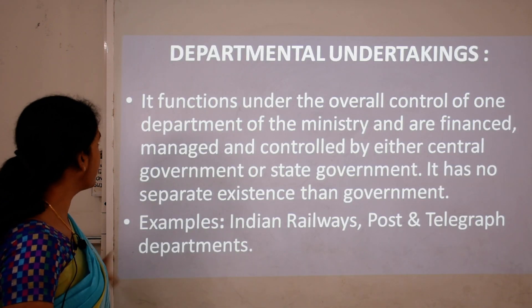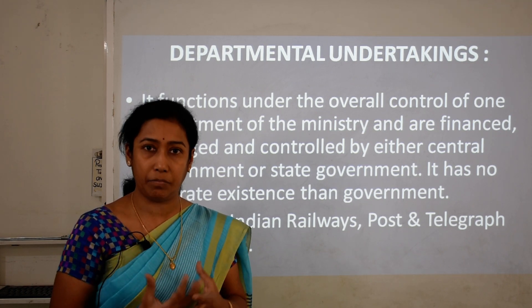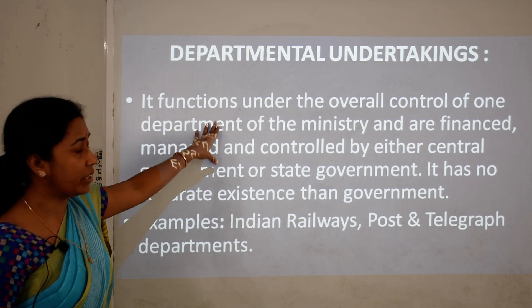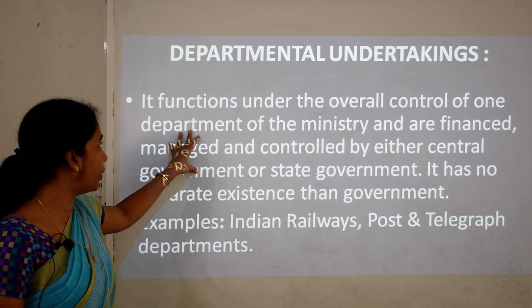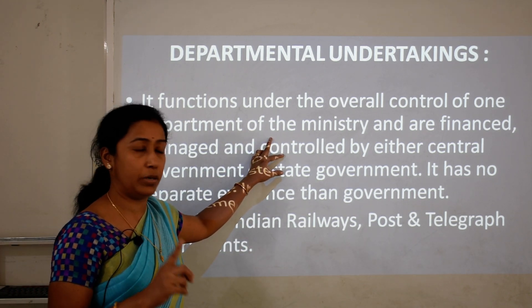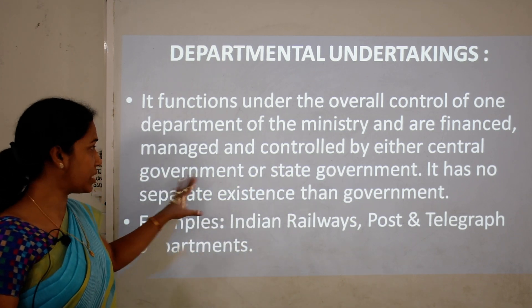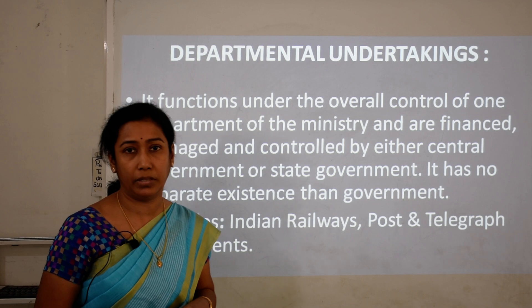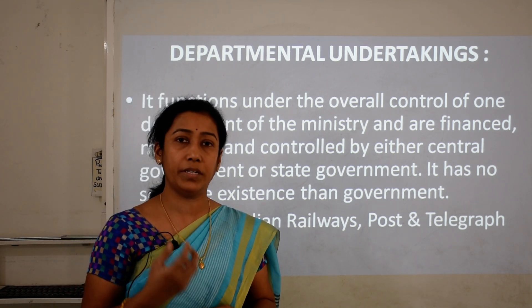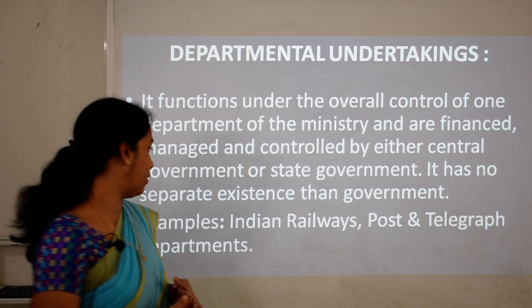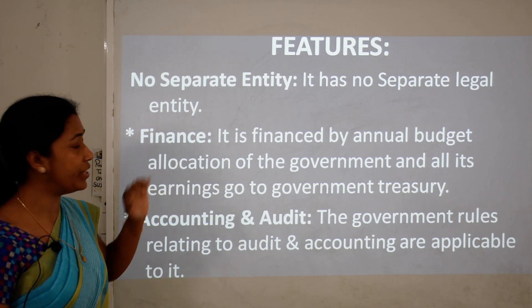The first form is departmental undertakings. As the name suggests, these function under the overall control of one ministry or department. They are financed and managed by central or state government and have no separate existence from the government. Management, control, and ownership are all in government hands. Examples include Indian Railways and the Post and Telegraph Department.